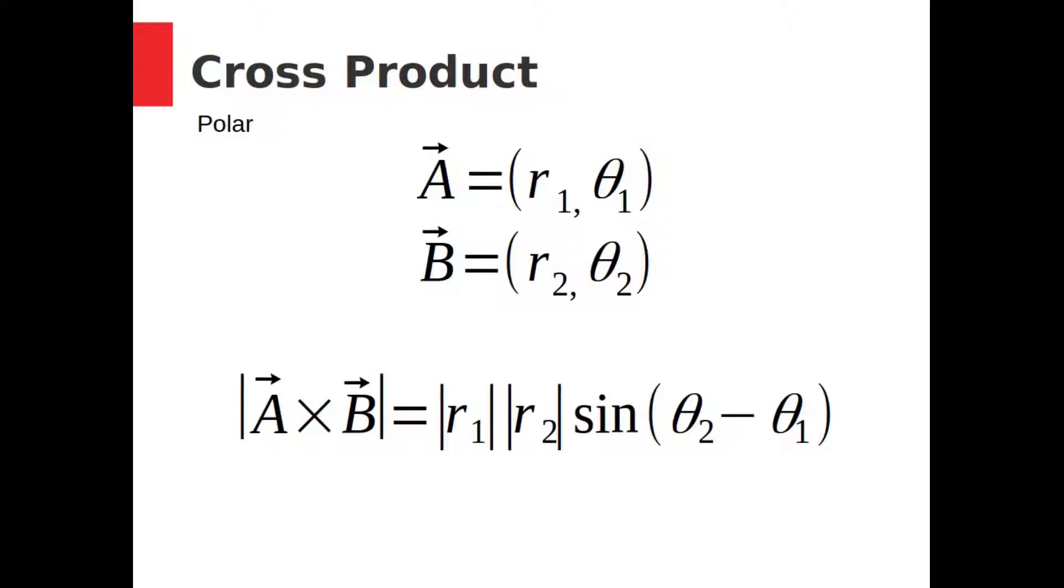The size of the product is calculated like this. Take the size of the first vector, multiply it by the size of the second vector, and then multiply that by the sine of the angle between them.